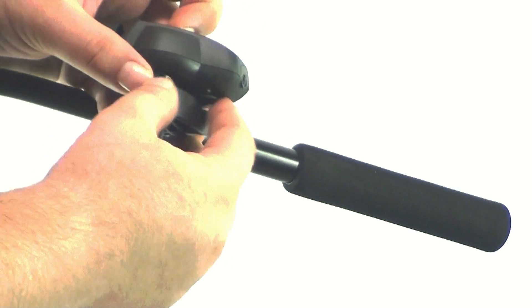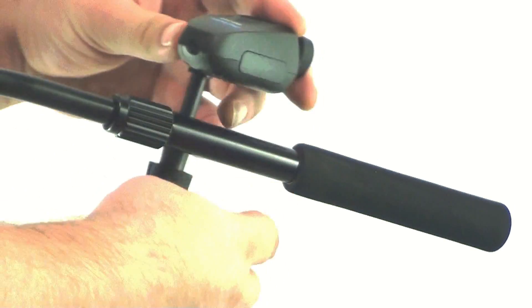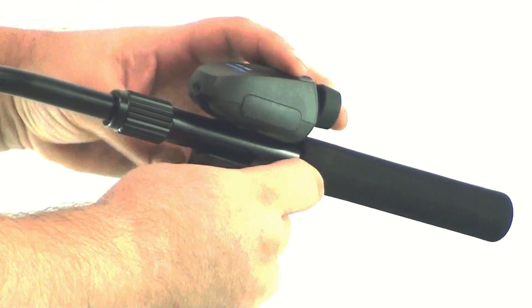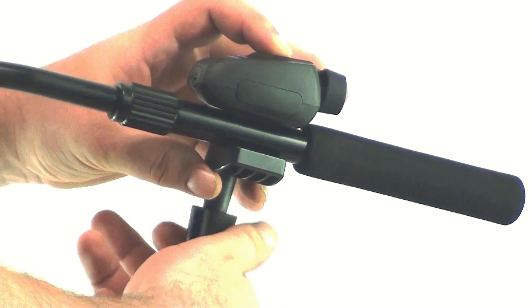Simply loosen the clamp lock knob. Open the clamp. Place the zoom control on your pan arm or mono pod, and tighten the clamp lock knob securely.